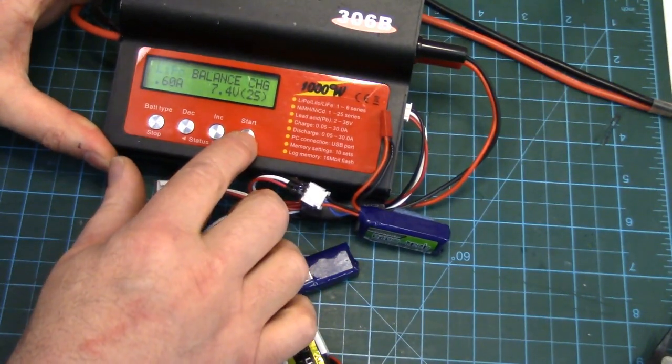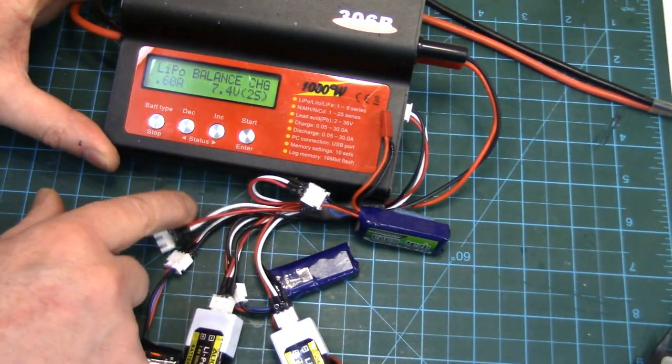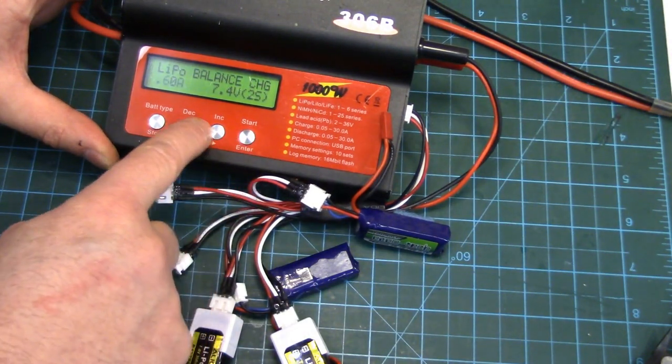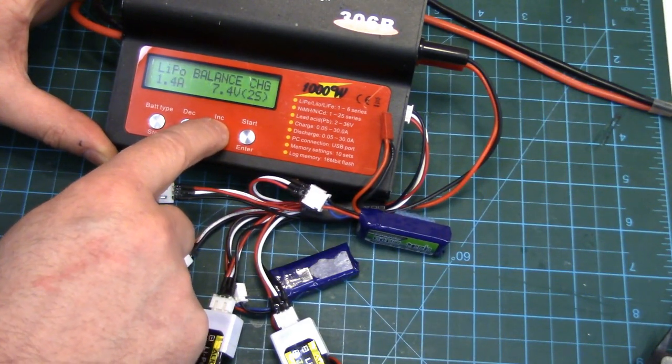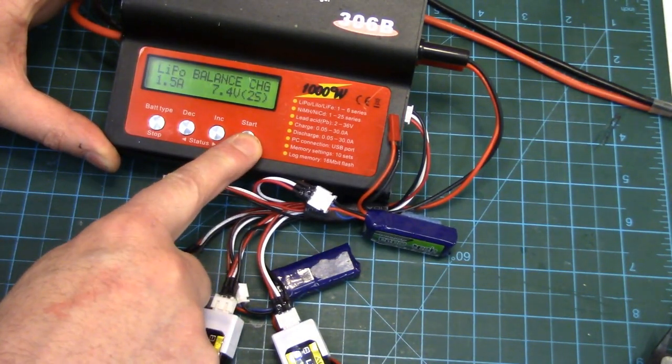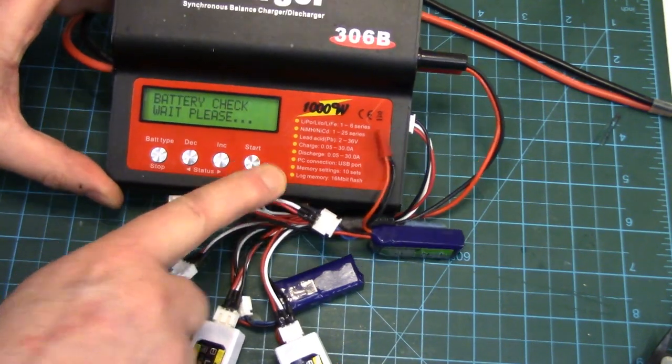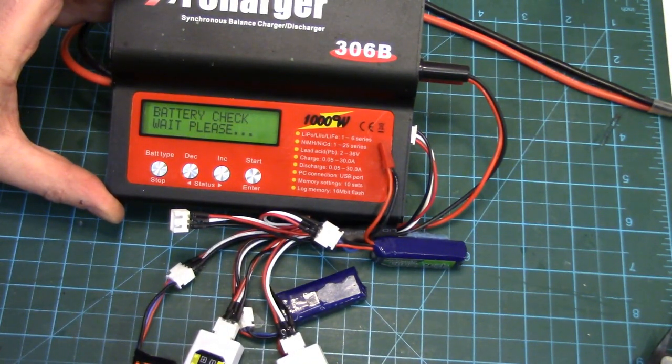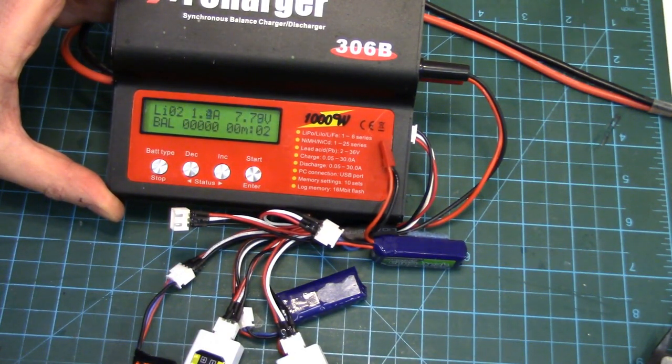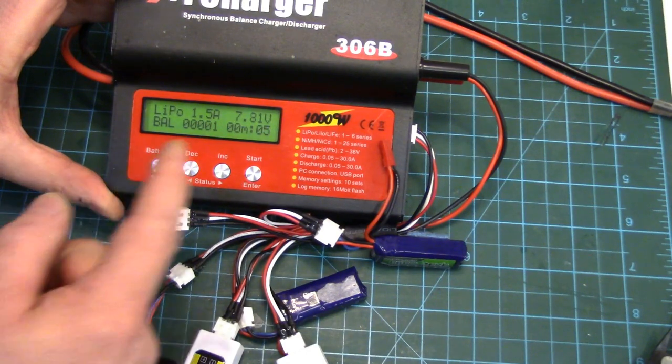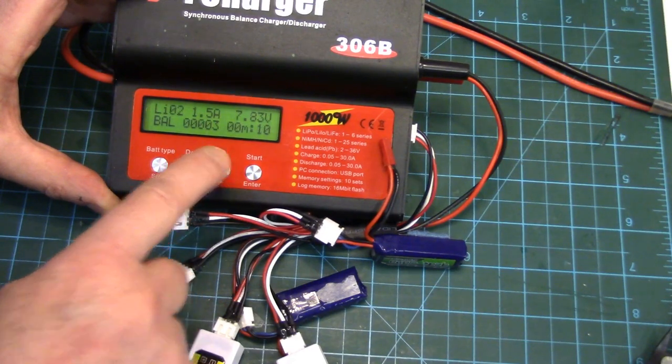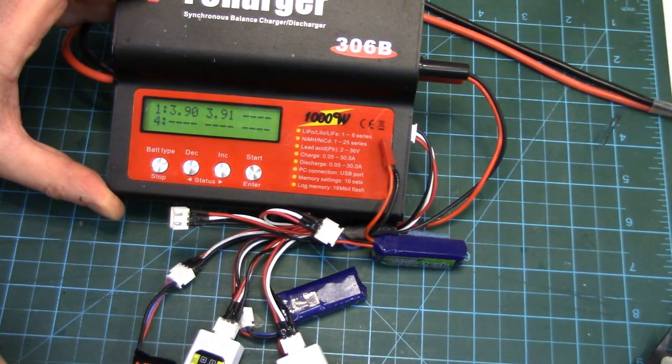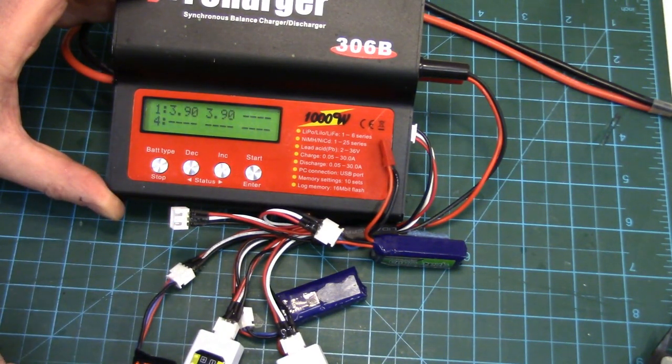And we will set the charge current again. What did I say? Three times five packs, 1500 milliamp hours, 1.5 amp charge rate. And start. There we go. Up to 1.5 amps. Voltage is coming up. And let's just take a look at our two balance circuits, our cell circuits. Nicely balanced. Coming up.